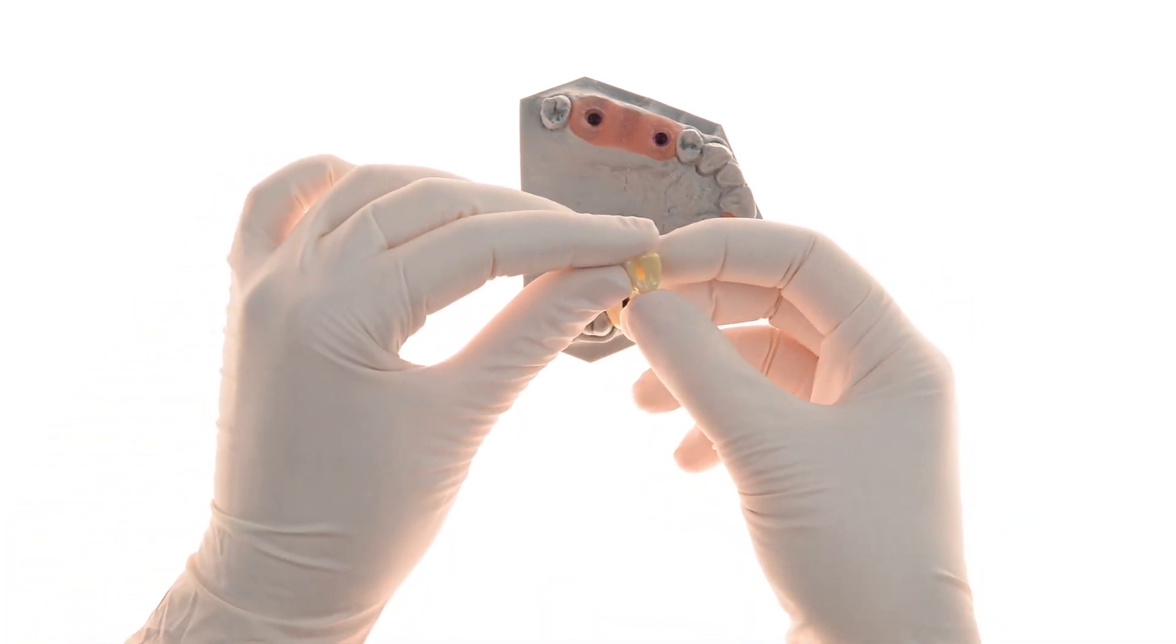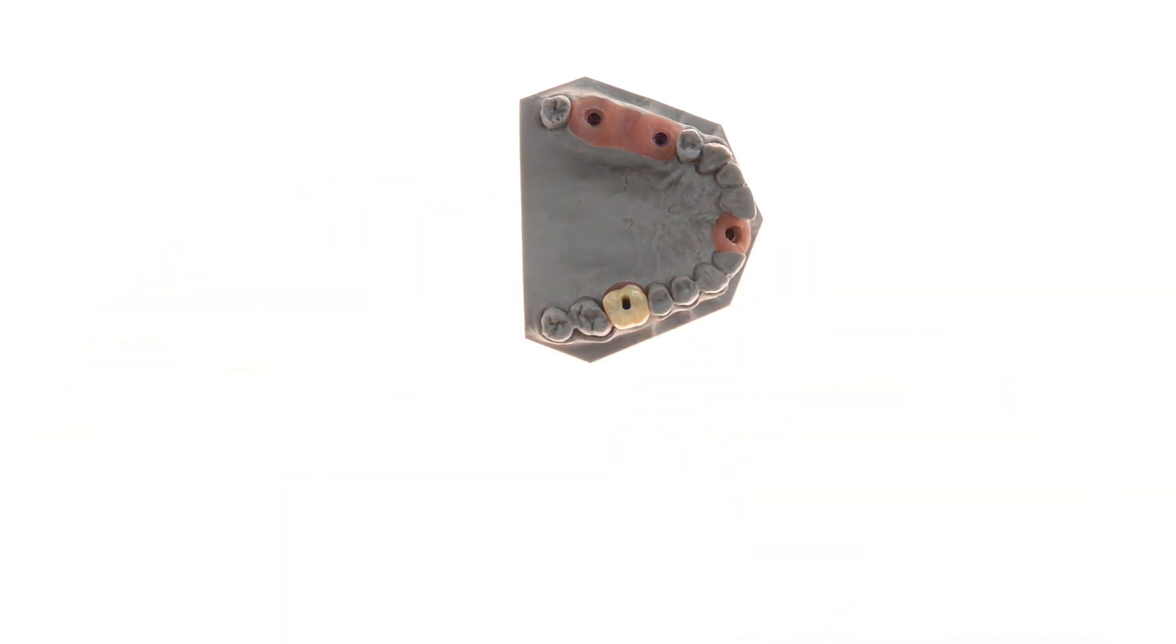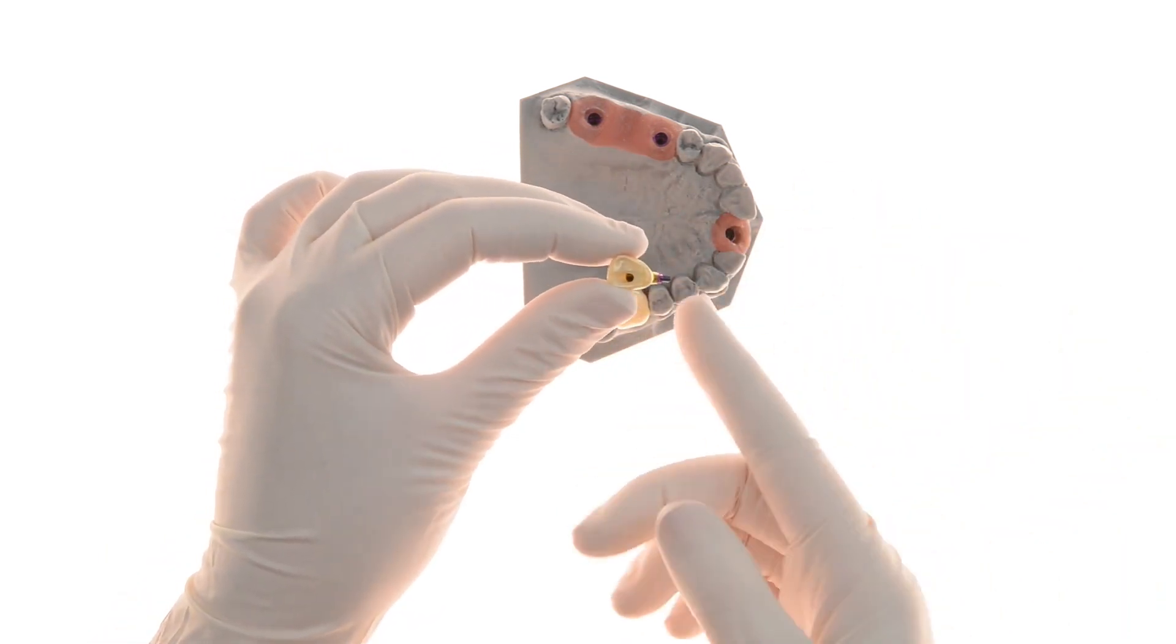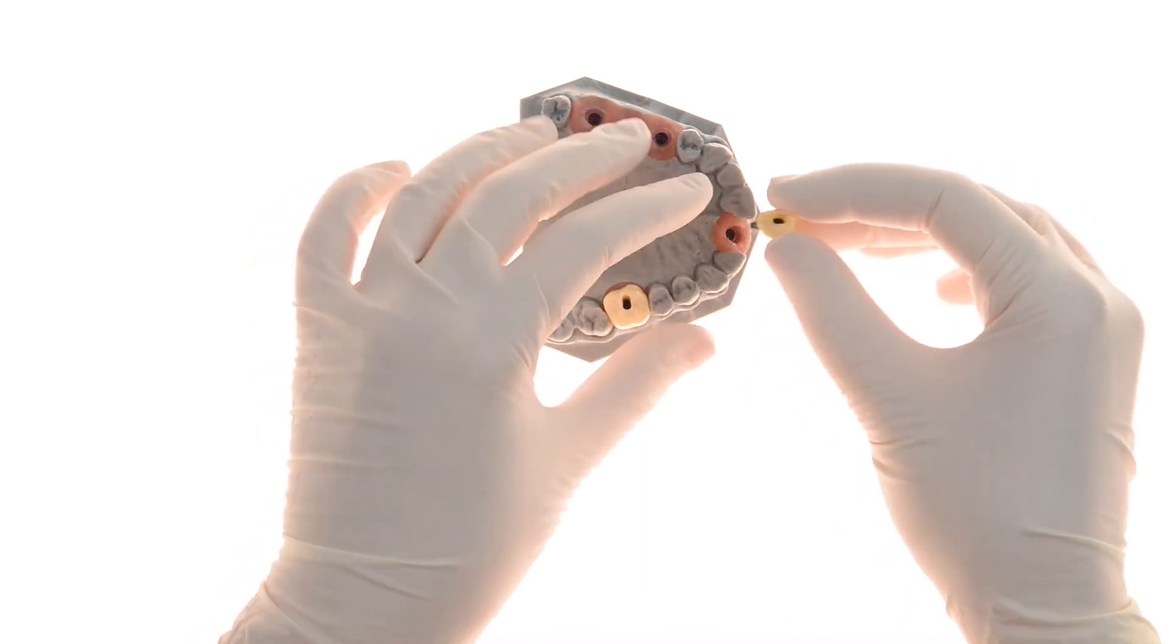Following the scanning, a custom-made restoration may be designed and milled, which includes the planned opening for the screw channel. Once the restoration is milled, the screw is positioned inside the adjustable EasyBase, then the restoration is cemented to it.